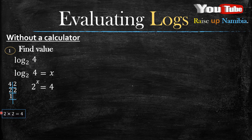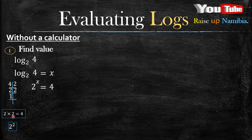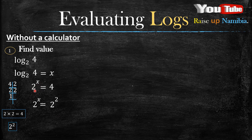If we write 4 as a product of its prime factors it will be 2 times 2, which is 4. If you don't know how to write a number as a product of its prime factors, there's a link in the description. So 2 times 2 written in exponential form looks like 2 squared, because the number being multiplied by itself is 2 — our base is 2 — and it's multiplied by itself twice, so our exponent is also 2.